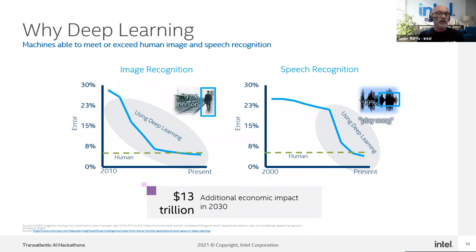In image and speech recognition, the power of computing has allowed deep learning to surpass human perception. Human perception is not really increasing, but computer recognition is — leading to a predicted $13 trillion in additional economic impact by 2030.